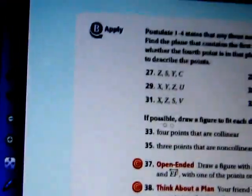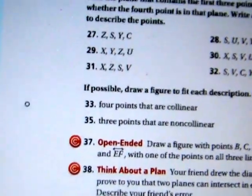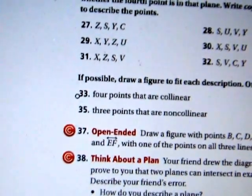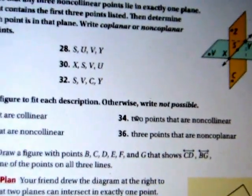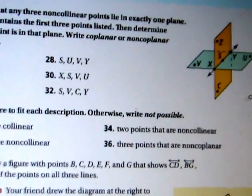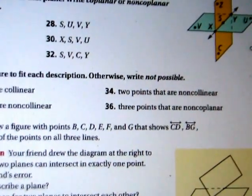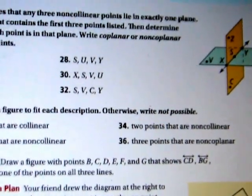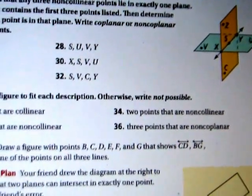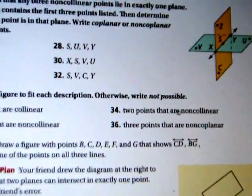Okay, if possible, draw a figure to fit each description. Otherwise, write not possible. Four points that are collinear. That's very easy. All you do is draw four points, one, two, three, four in a straight line, and they would be collinear. Number 34. Two points that are non-collinear. Well, that's bullcrap because if you take any two points, you can always draw a straight line through them. So all you've got to do is draw two points and prove that you can draw a straight line. It is impossible to draw two points that are non-collinear.